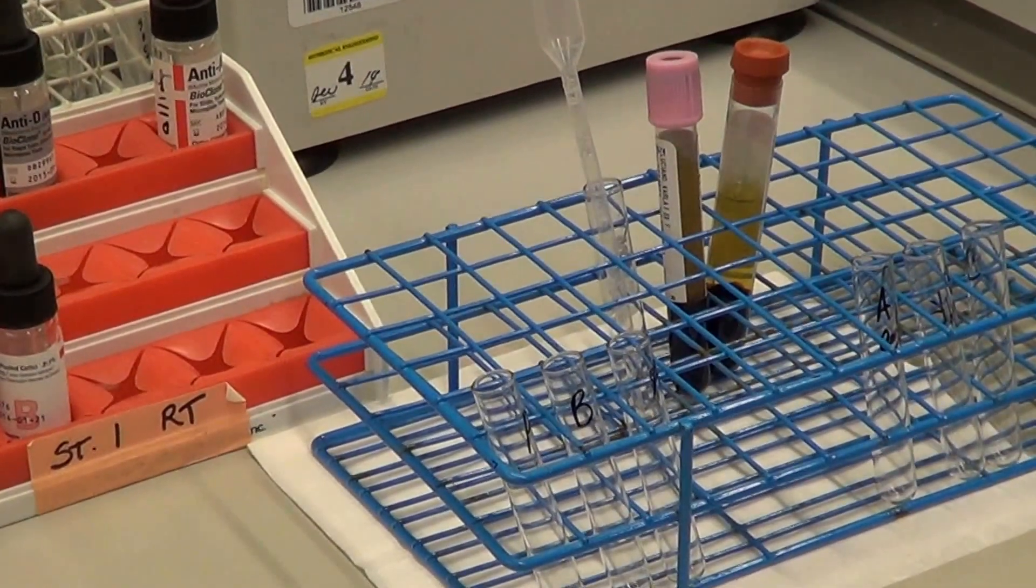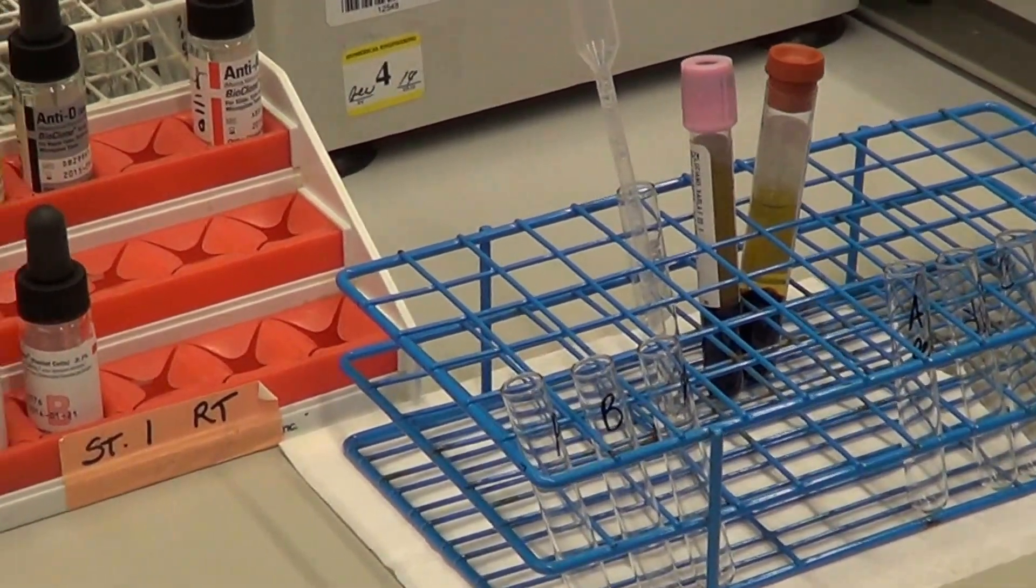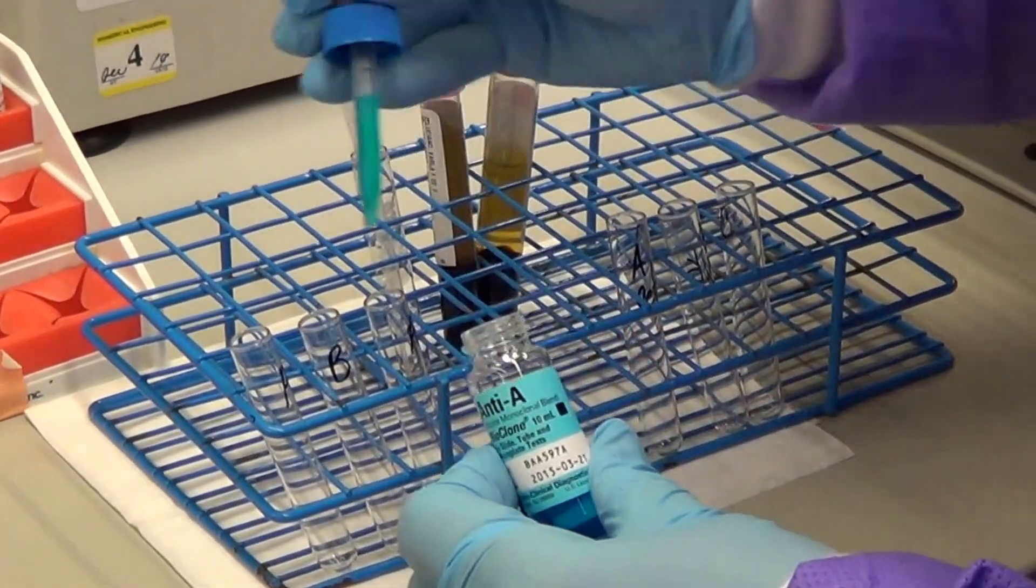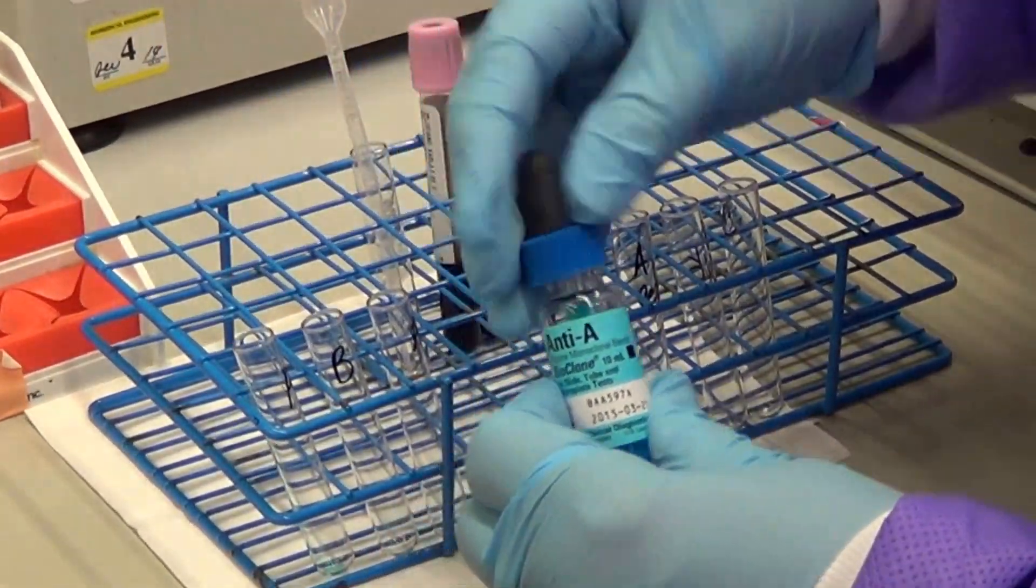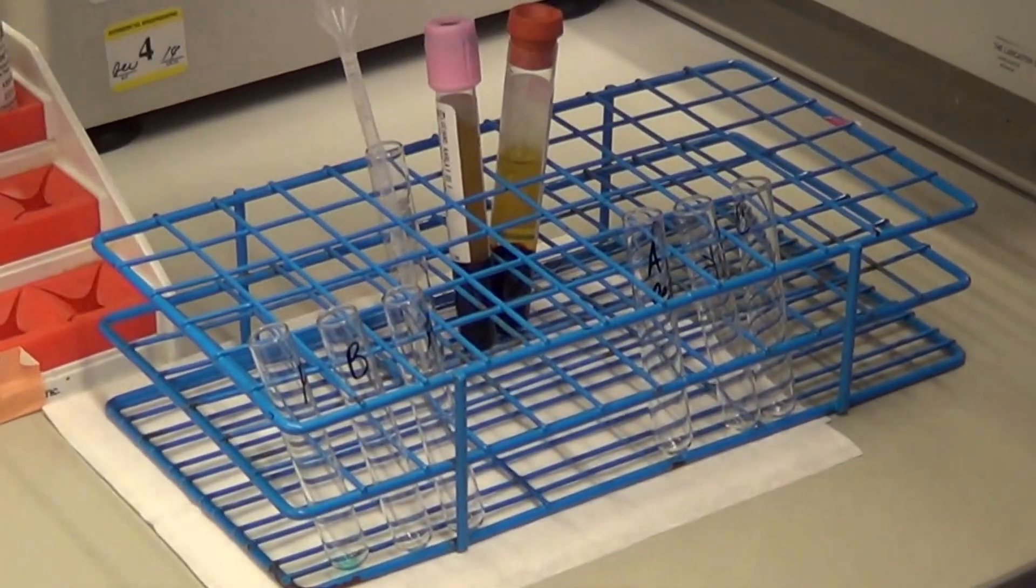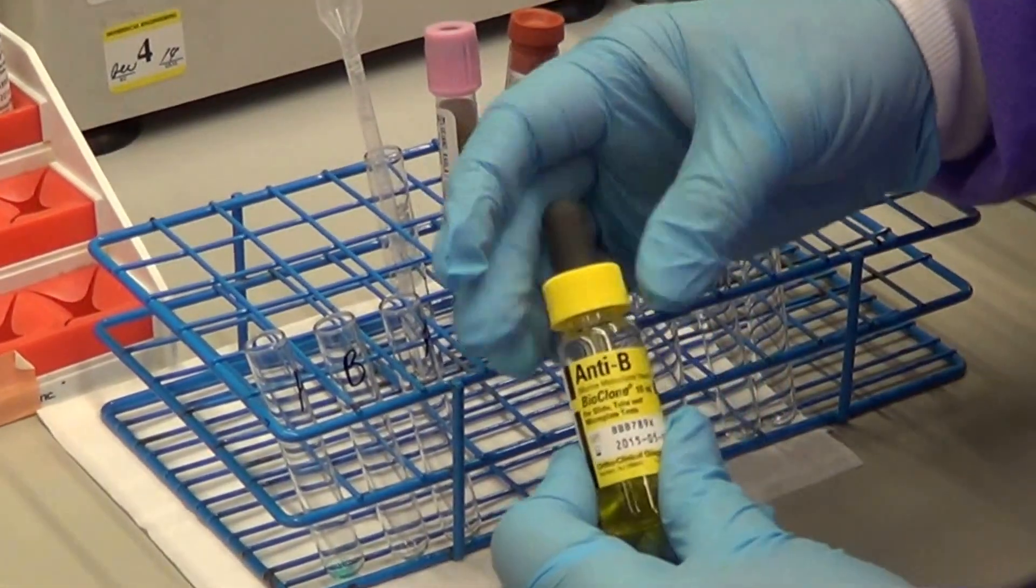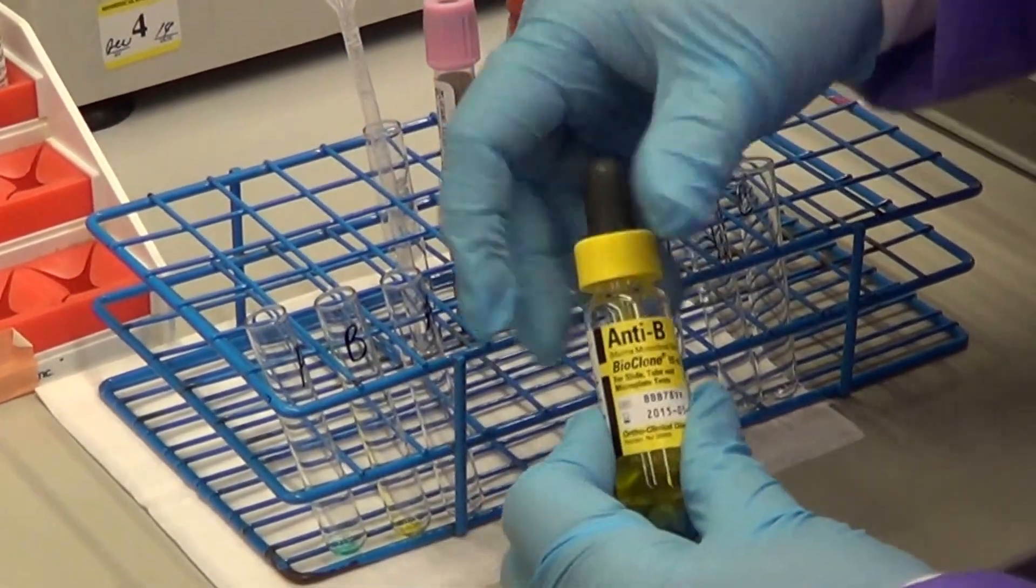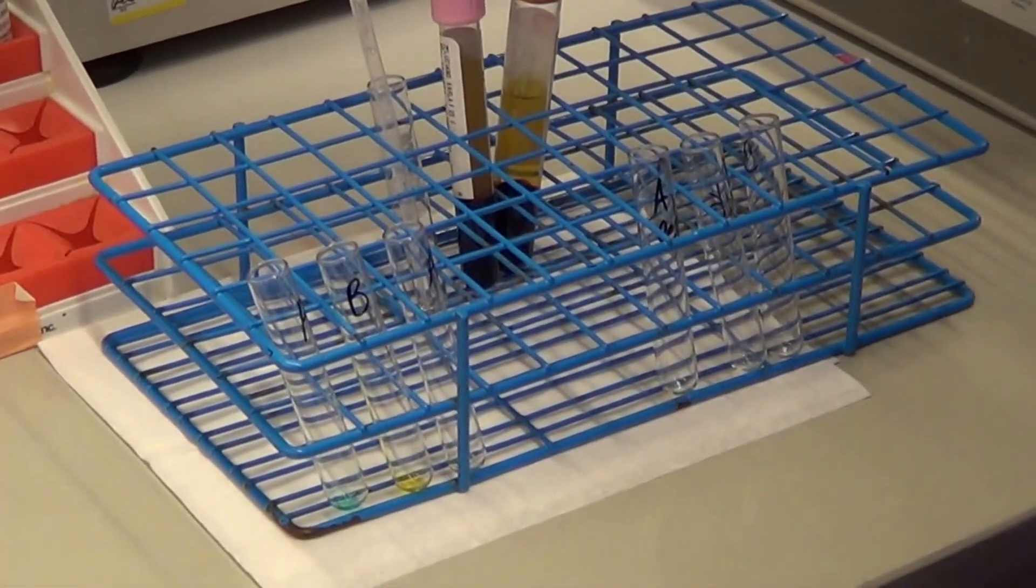We will now perform a blood type. The first step is to drop your typing reagents: one drop of anti-A, one drop of anti-B, and label them A and B.